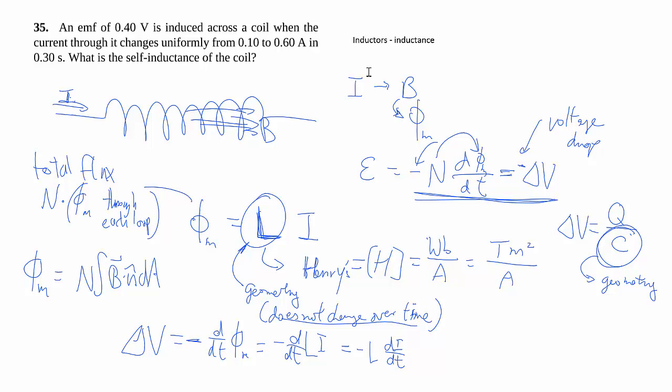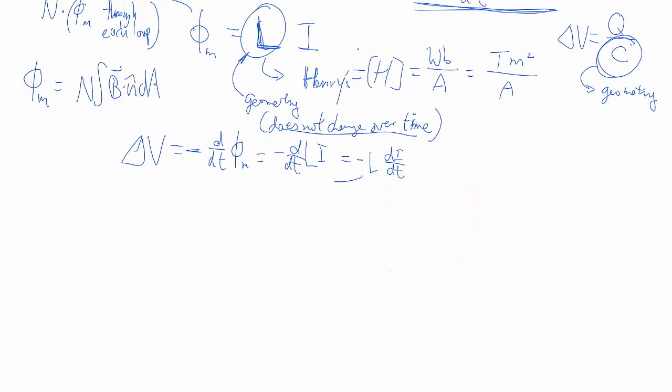And so for a solenoid, because of the way as we increase the current, as we change the current, that changes the flux inside the coil, which in turn creates an EMF that opposes that change, Lenz's law, which then affects the rest of the circuits. That's the idea behind the inductor, in the sense that it resists changes in current.